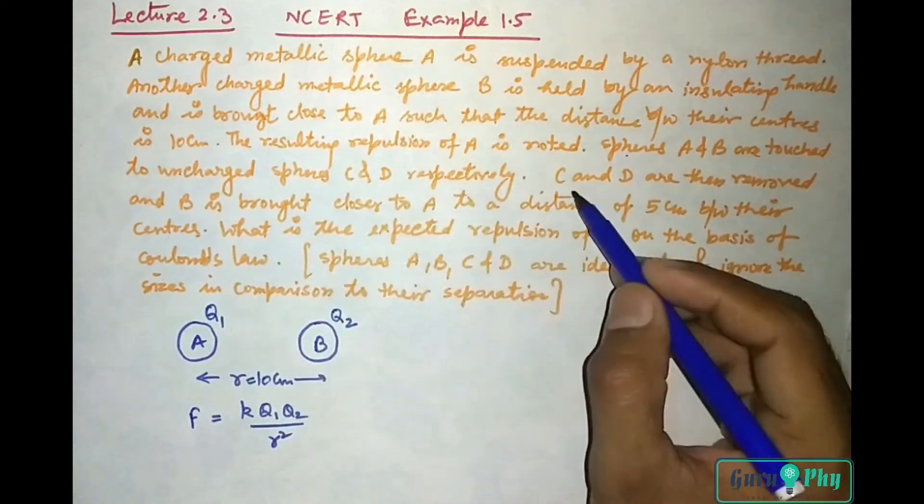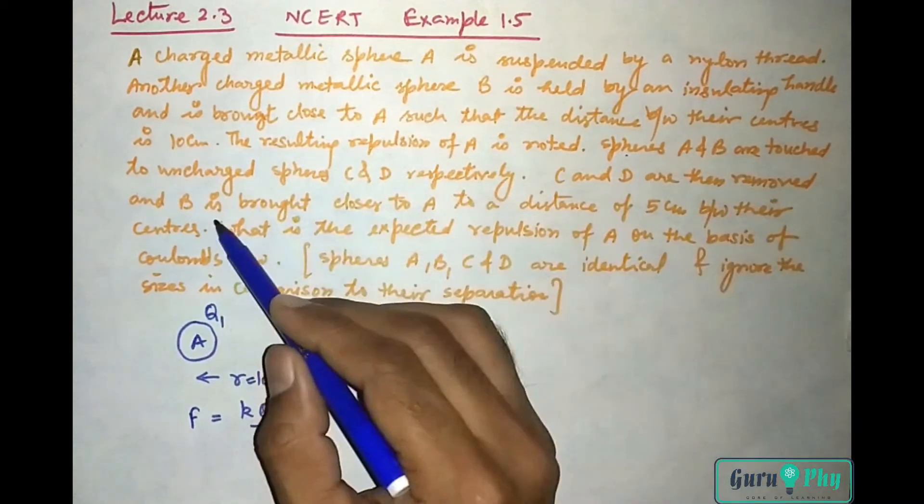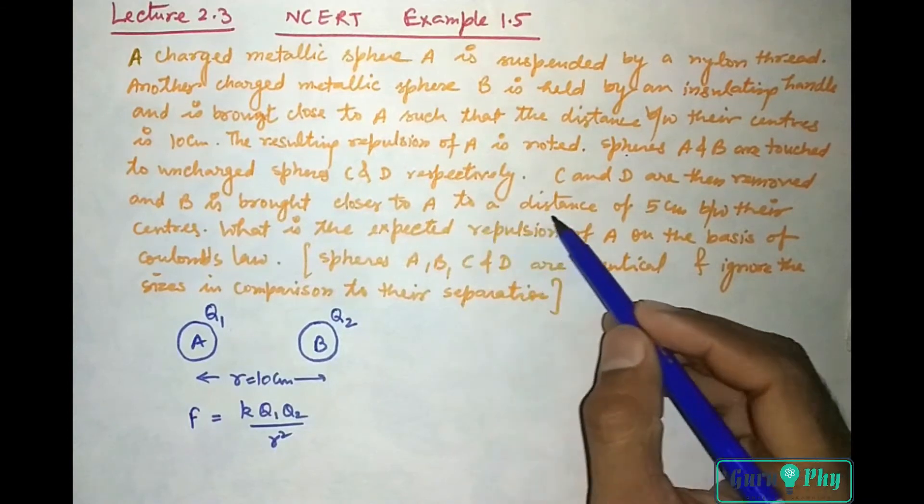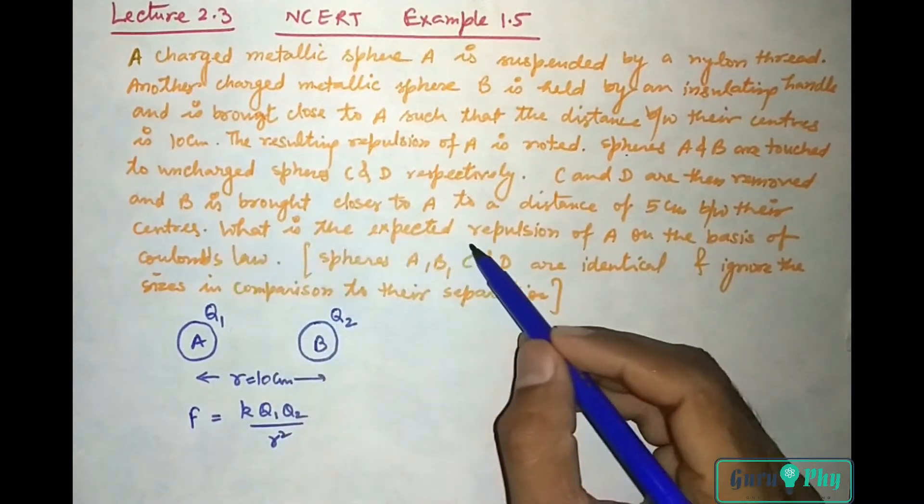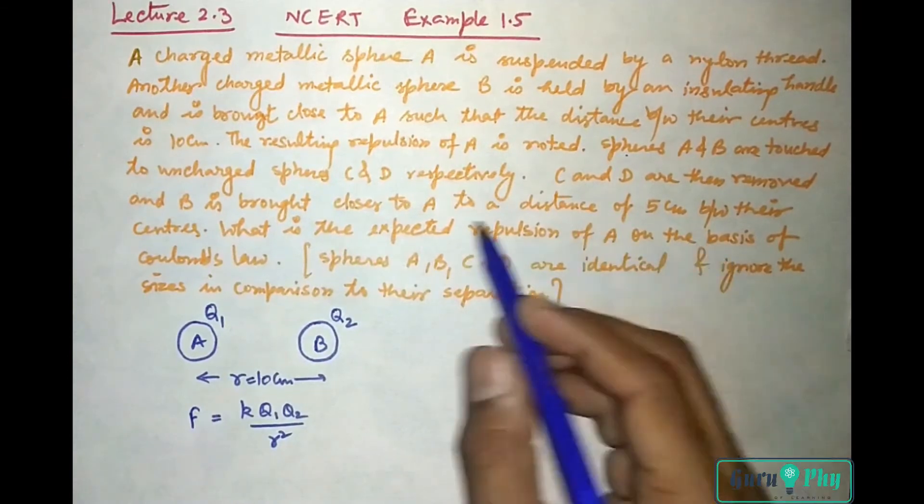C and D are then removed and B is brought closer to A to a distance of 5 cm between their centers. What is the expected repulsion of A on the basis of Coulomb's law?